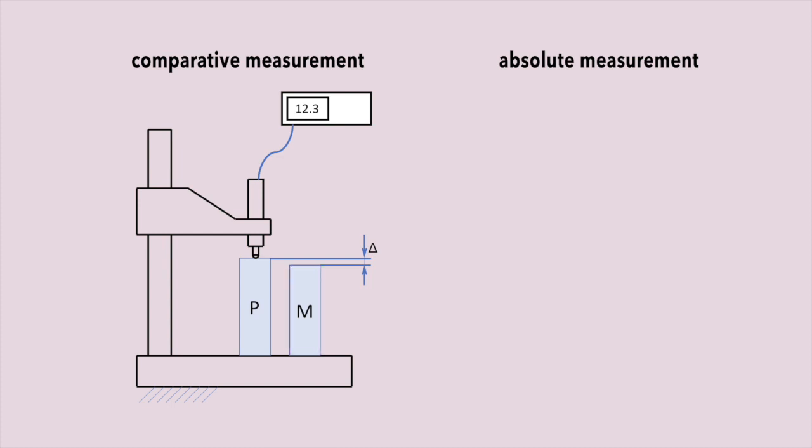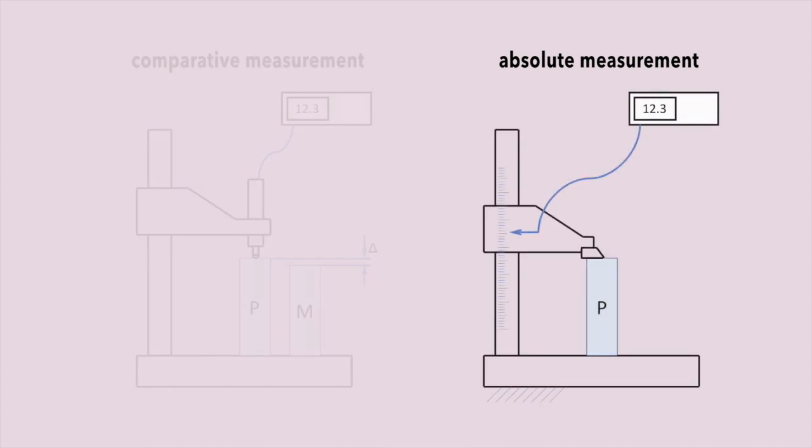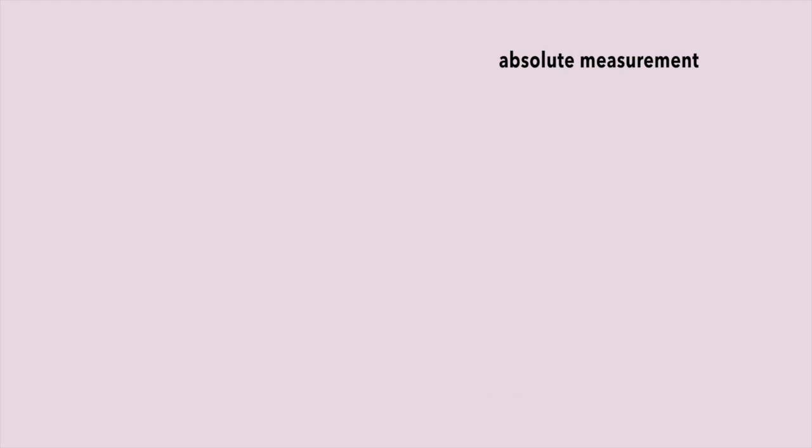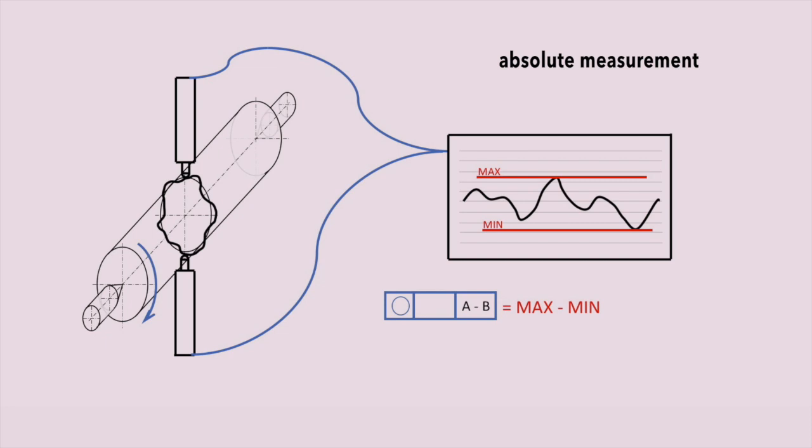In absolute measurements, the master is not needed. This is typically in cases where the scale has a fixed reference, like measuring the length with the scale starting from the base at zero, or where the measured dimension is itself relative, like a difference of the extremes in roundness.